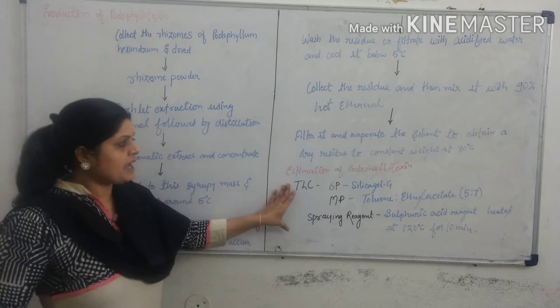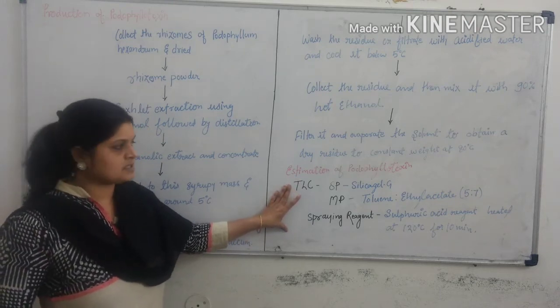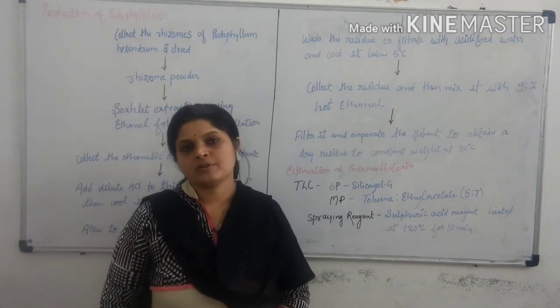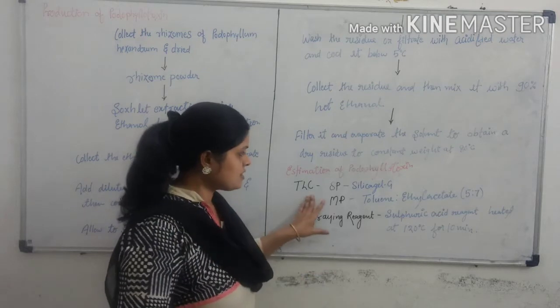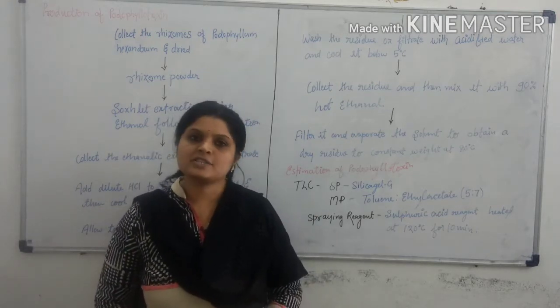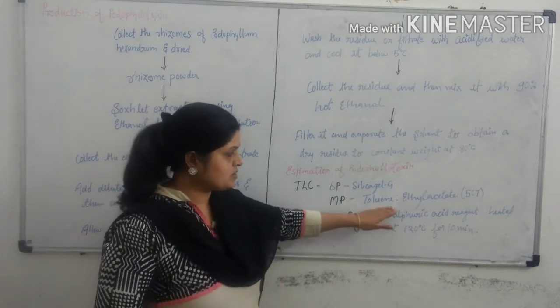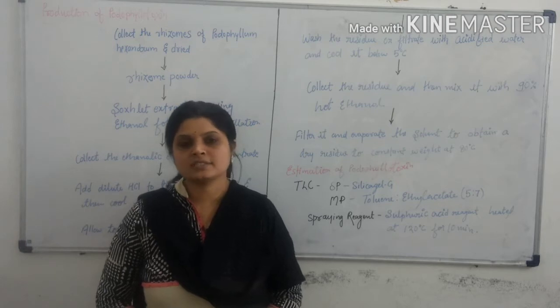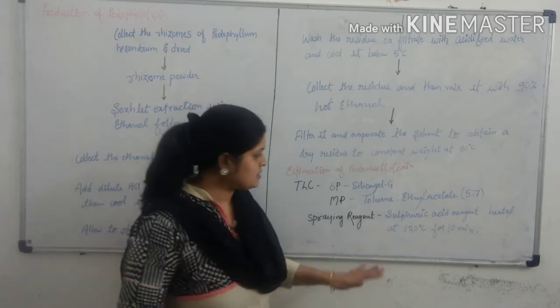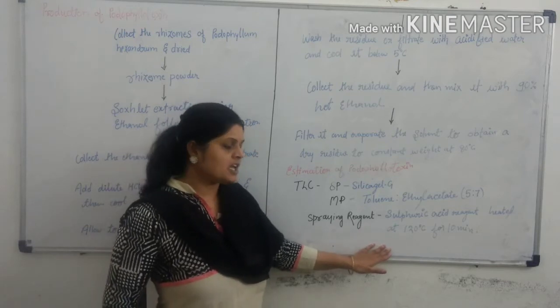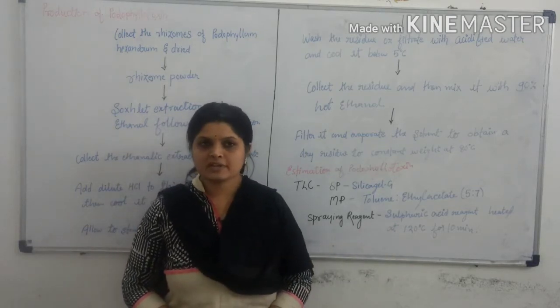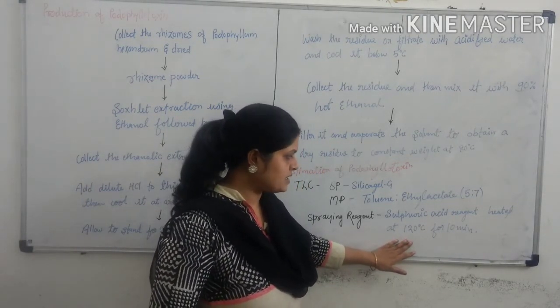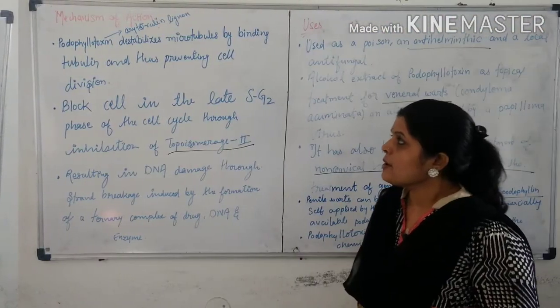Identification of podophyllotoxin: Podophyllotoxin is estimated by thin-layer chromatography. In which silica gel G is used as a stationary phase, toluene ethyl acetate in 5:7 ratio is used as a mobile phase, and sulfuric acid reagent is used as a spraying reagent. And it is heated at 120 degree centigrade for 10 minutes.